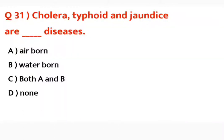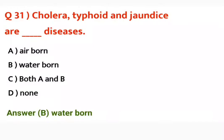Question number thirty-one: Cholera, typhoid and jaundice are airborne, waterborne, both A and B, or none? Correct answer is waterborne — all these diseases are waterborne and spread from contaminated water.